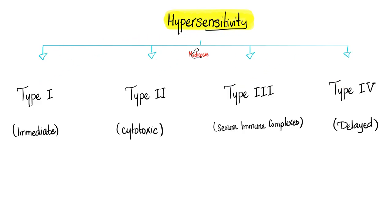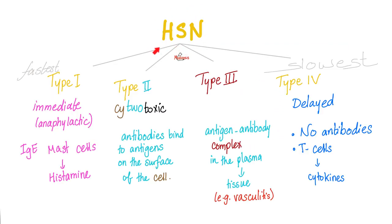Hypersensitivity type 1, type 2, type 3, type 4. Type 1 is immediate, but type 4 is delayed. Type 2 is cytotoxic. Type 3 — you have free antibodies. By free, I mean the antibodies are floating in the plasma, in your blood. They are not bound to cells, not cytotoxic like type 2. You can describe type 3 with three words: serum immune complexes. Which type is the fastest? Type 1. Which is the slowest? Type 4.